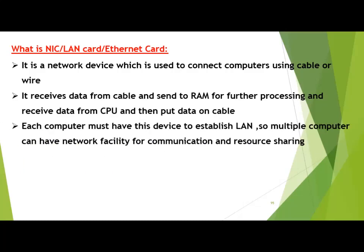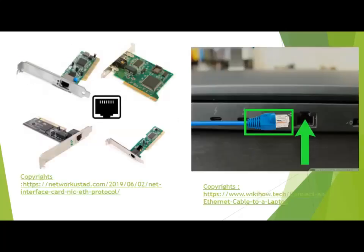Each computer must have this device to establish a network so multiple computers can have network facility for communication and resource sharing. Normally it comes with the computer system. On the left side of the picture you can see different LAN cards connected on the motherboard. From the back side of the computer or on a laptop you can find these LAN cards. The arrow on the right side picture shows the LAN card, and you can see a network cable which can be attached to it.